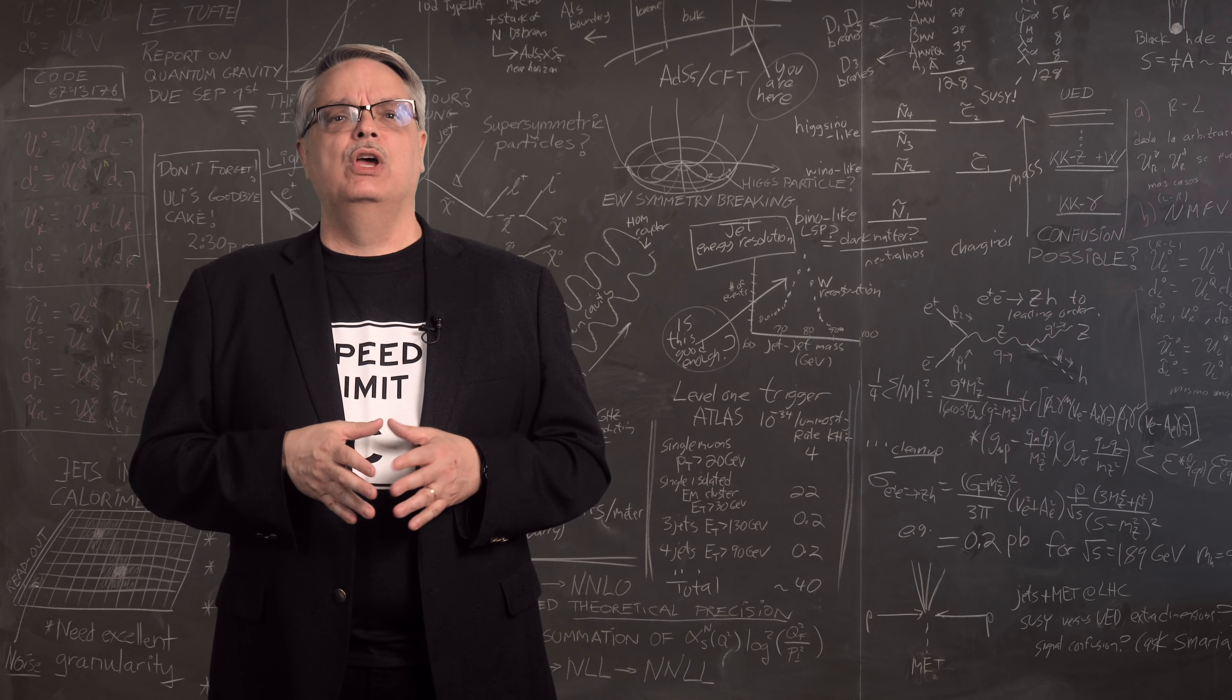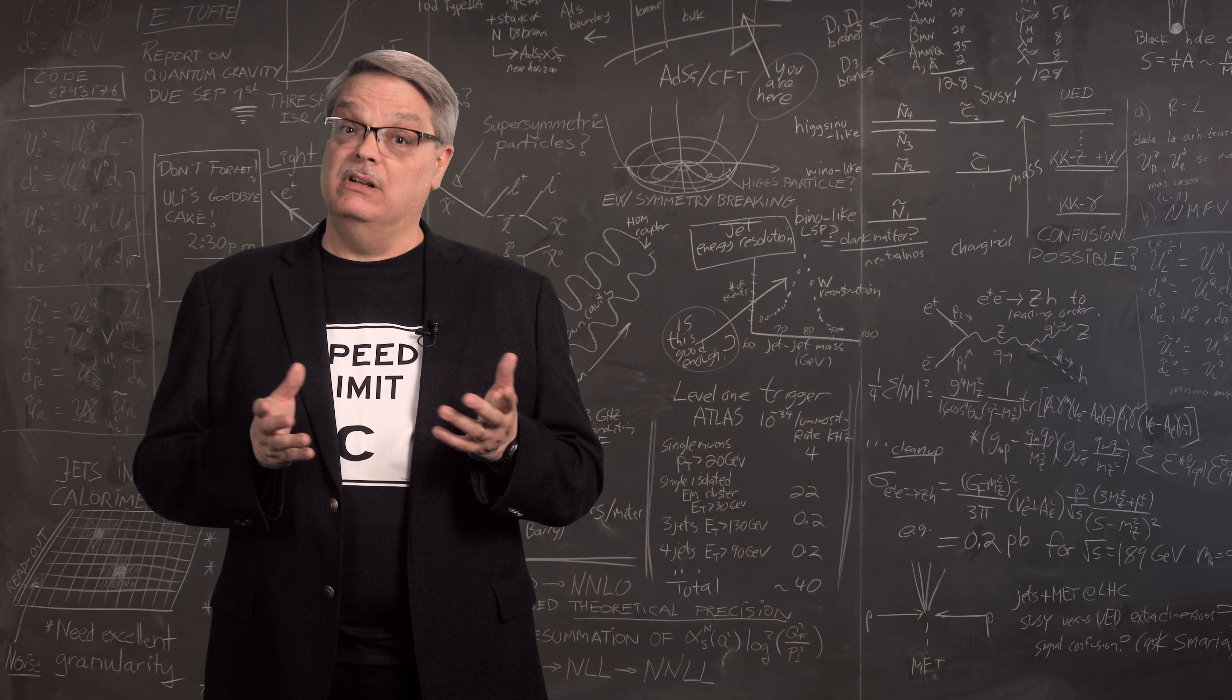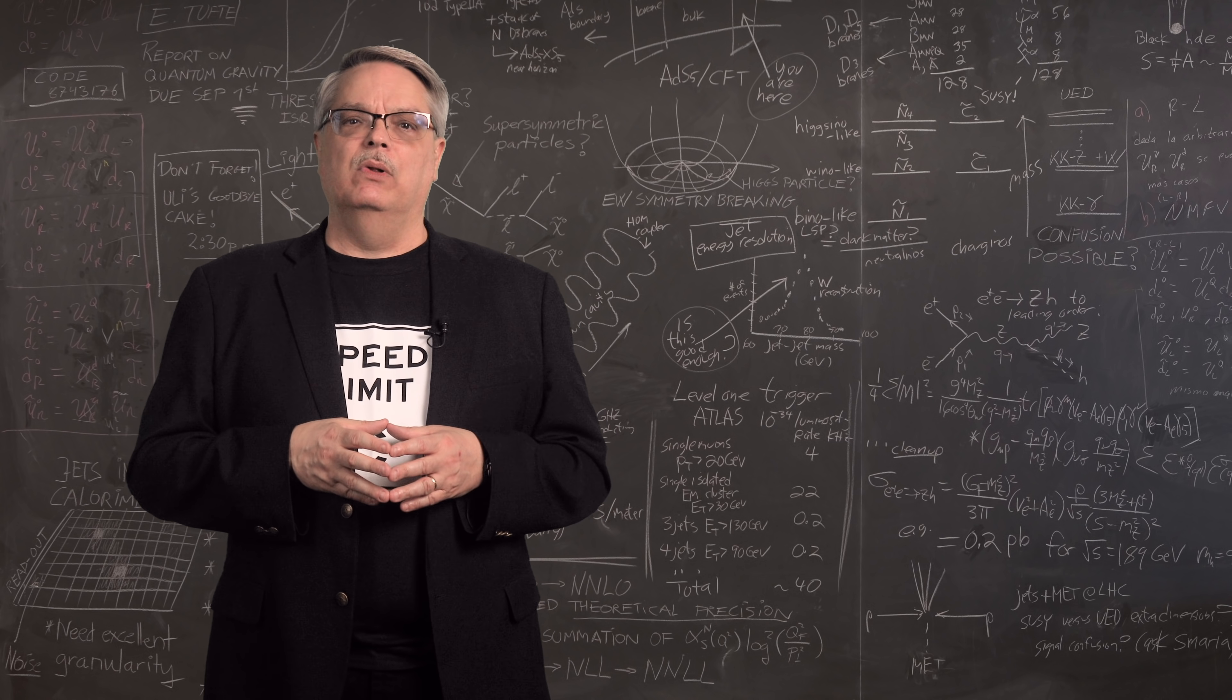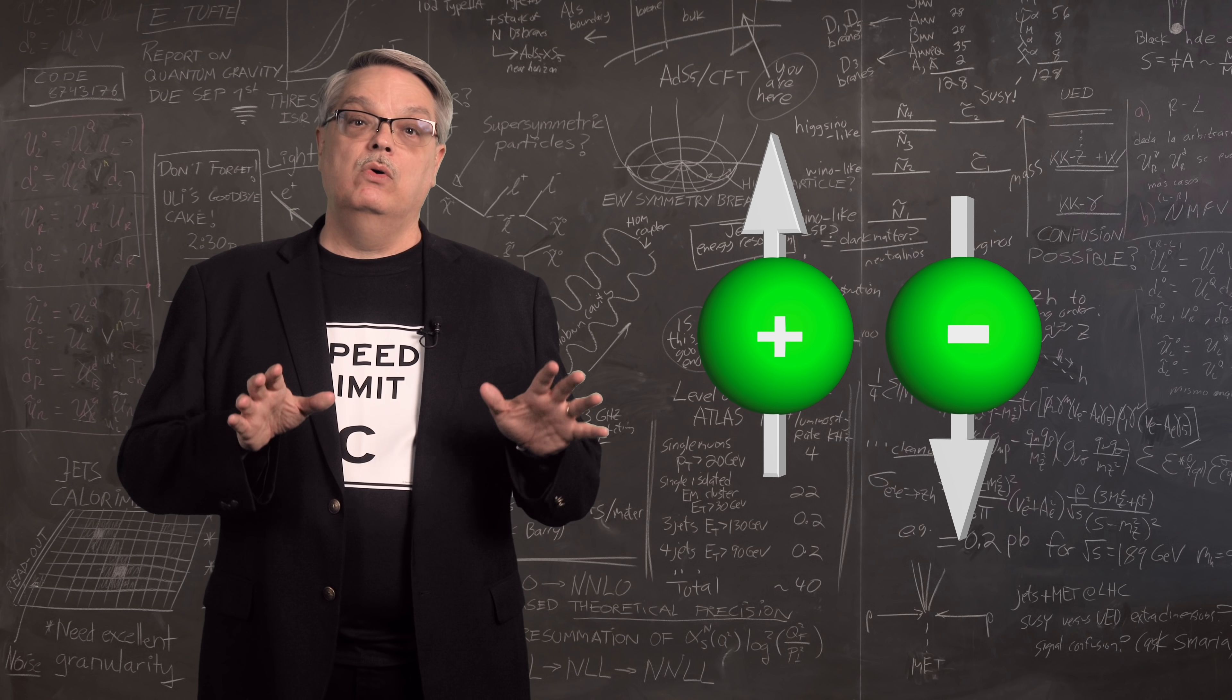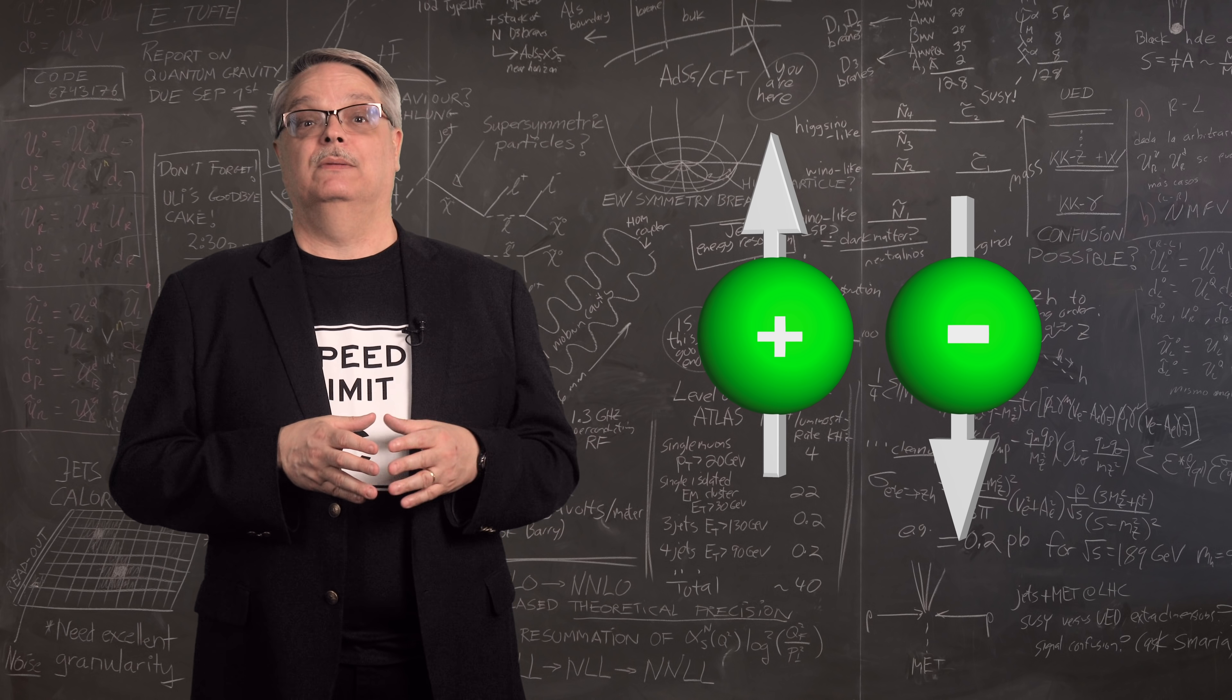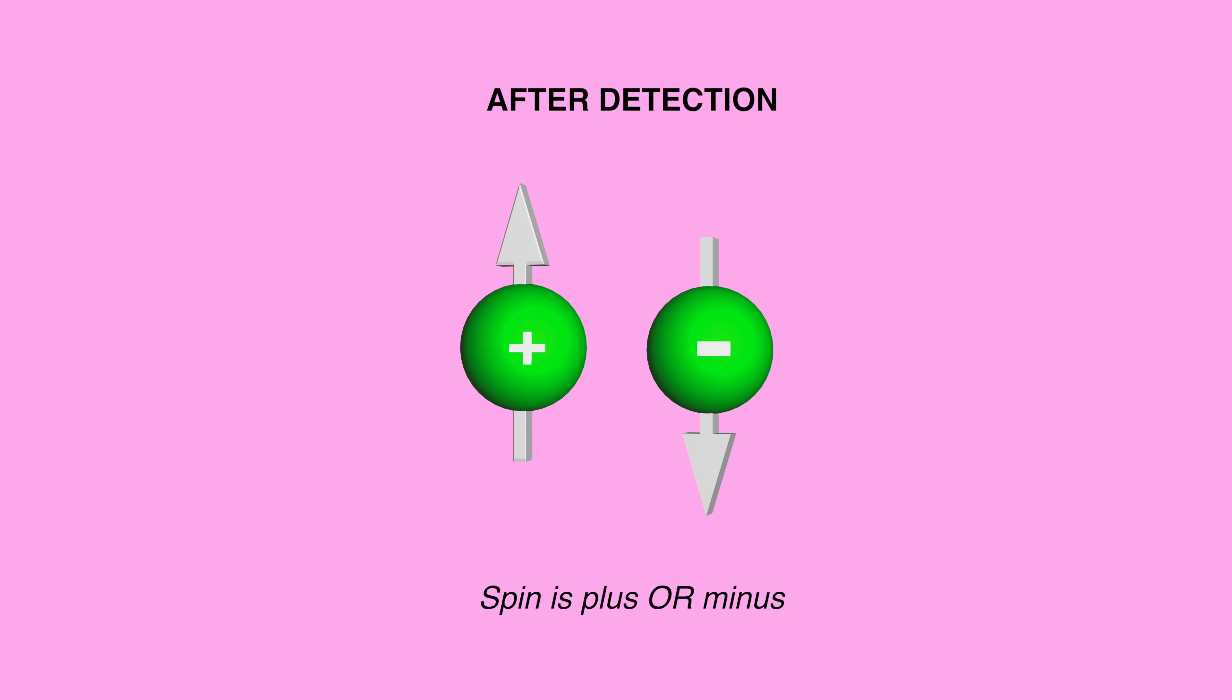In quantum mechanics, probability rules. Anything that is possible can happen, governed by the probabilities of that particular situation. As an example, a subatomic particle can have a spin of plus or minus. You can't know which of those spins it has until you actually measure it. It's important to understand that this isn't a simple case of ignorance. It's not that the spin is plus or minus and you just don't know. It's both plus and minus, and it becomes plus or minus when you measure it.